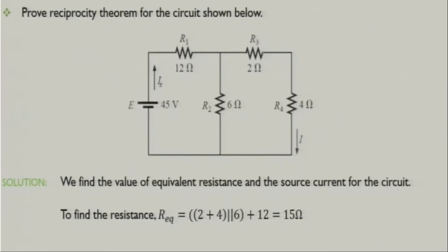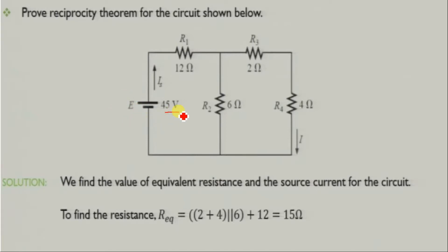Let's try to solve one example to better understand this theorem. We are asked to prove the reciprocity theorem for the circuit shown. First, we check how many voltage and current sources are present so we can apply the theorem. There is no time-varying quantity, so the reciprocity theorem can be applied. The value of E is given as 45 volts. We calculate in the first step, then interchange, and calculate the value of I.